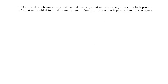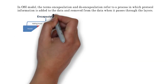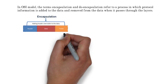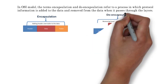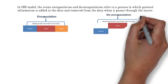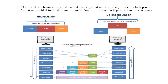In the OSI model, the terms encapsulation and de-encapsulation refer to a process in which protocol information is added to or removed from the data as it passes through the layers. Encapsulation means adding a header and trailer to the data, and de-encapsulation means removing the header and trailer from the data.